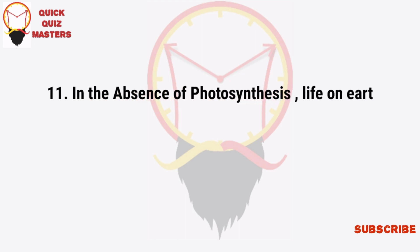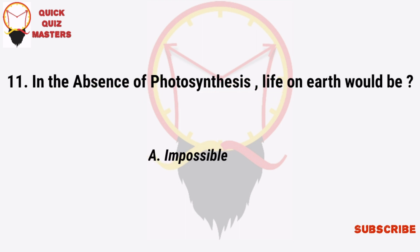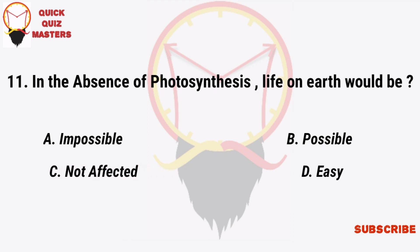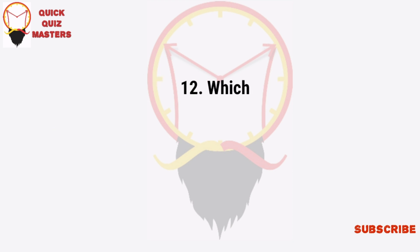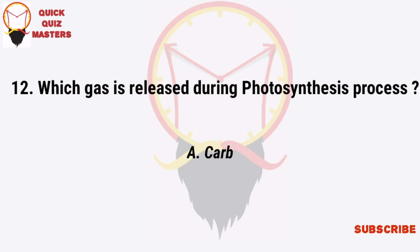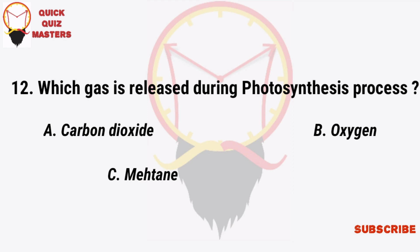In the absence of photosynthesis, life on Earth would be: impossible, possible, not affected, easy. Which gas is released during the photosynthesis process? Oxygen, carbon dioxide, methane, all of these.